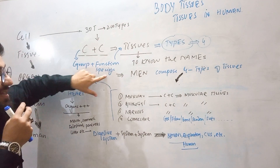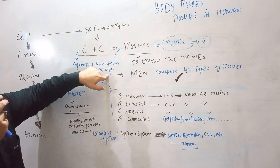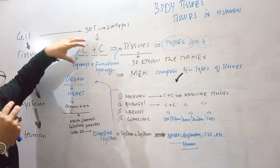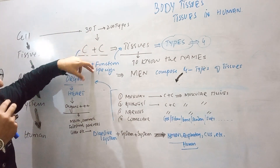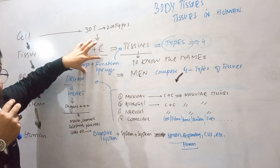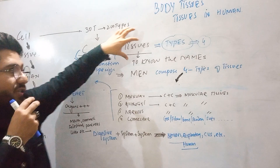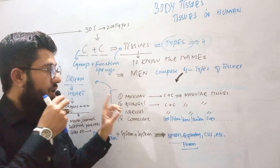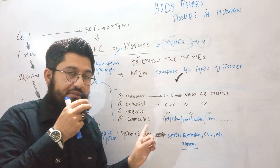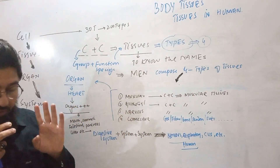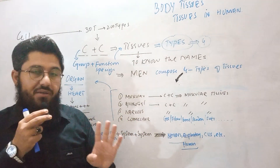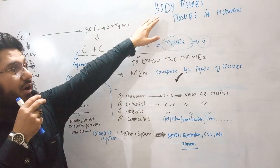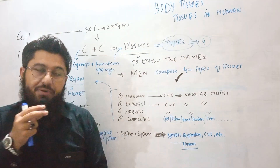When the cells group together for a specific function, those groups of cells are actually called tissues. So we actually have four types of tissues: muscular, epithelial, nervous, and connective tissues. These four are the basic types of tissues found in the human body.